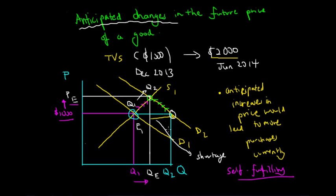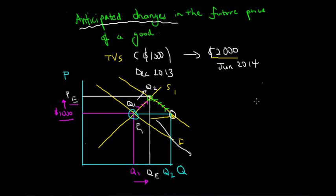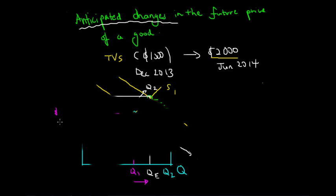The market has reached a new equilibrium point. Relating this back to the macro economy, this connects to how anticipated inflation would actually fulfil itself as actual inflation — a concept we'll look at in later lectures. Now let's look at the converse: what happens if there is an anticipated decrease in the price of a TV?